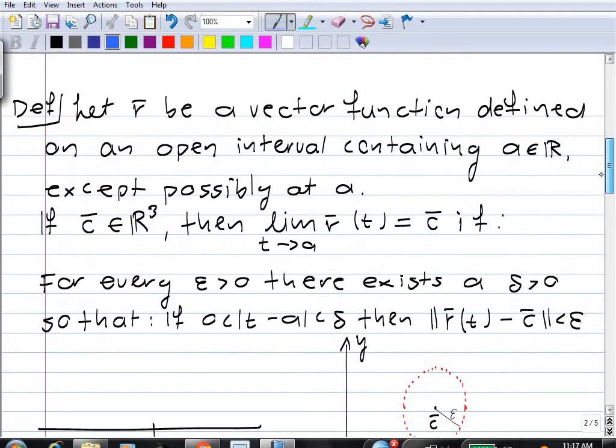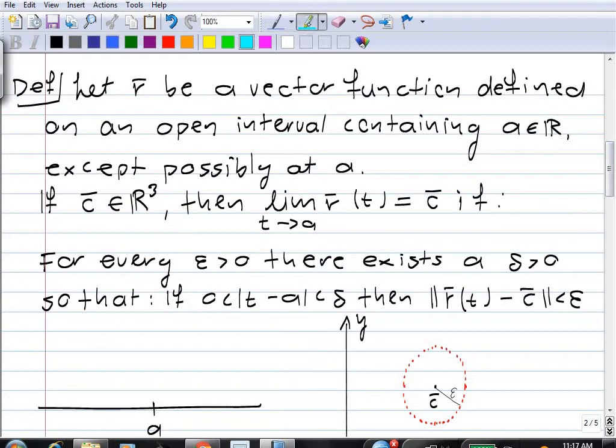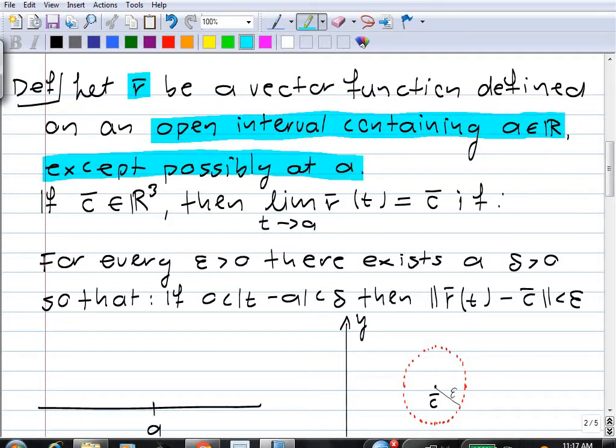So let's see, what's the definition of a limit of a vector function? Well, we're essentially mimicking the definition of a limit for a function from R to R. So we have some vector function r, and it's defined on an open interval containing a real number a, except possibly at a. Now, the limit of this vector function is supposed to be some vector in R³. If this is a three-dimensional vector function, in the case of a two-dimensional vector function, the limit would be in R². So what do we mean when we say that the limit as t goes to a of r(t) is c? Well, like I said, we mimic the definition for the limit of a function from R to R.